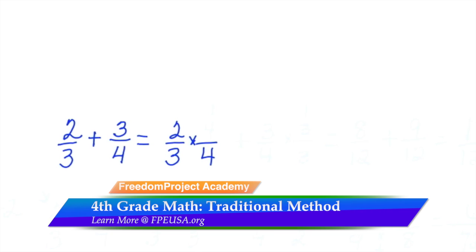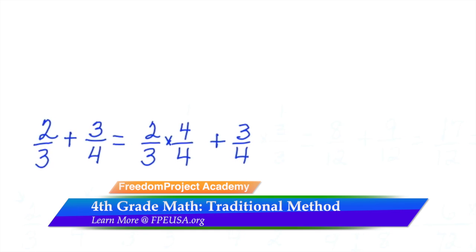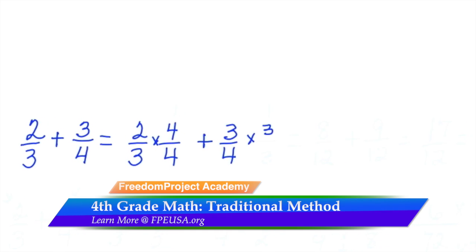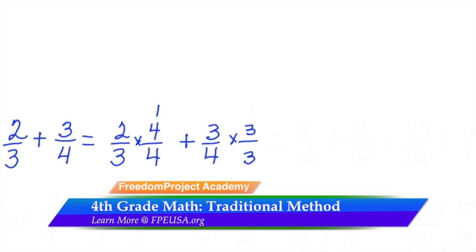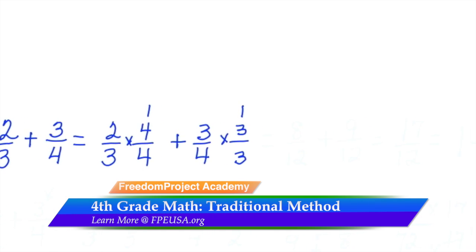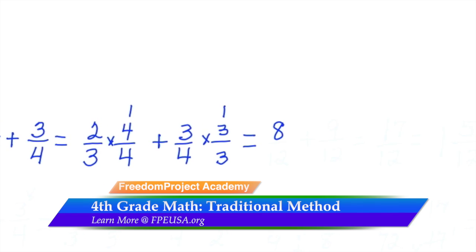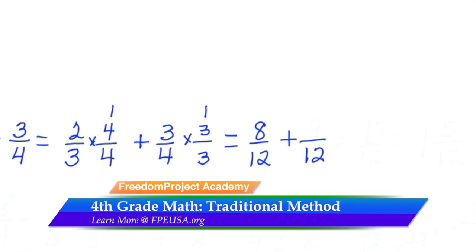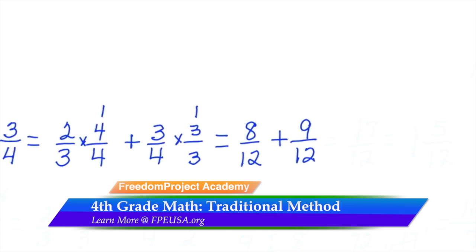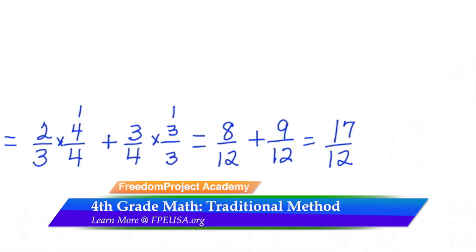which is equal to one, plus three-fourths times three over three, which is equal to one. So we have not changed the value of either fraction because we've multiplied both by one, and we then come to eight-twelfths plus nine-twelfths, and we simply add the numerators to get seventeen-twelfths.